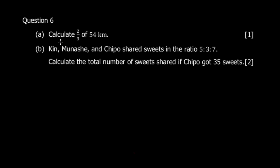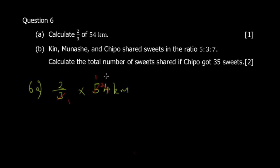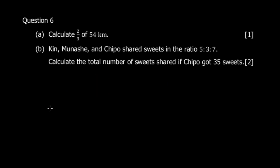Part A: calculate two thirds of 54 kilometers. You write 2 over 3 multiplied by 54 kilometers. 3 into 3 is 1, remainder 2 into 24 gives 8, then 8 multiplied by 2 gives 36. Don't forget to put the units — the answer is 36 kilometers.